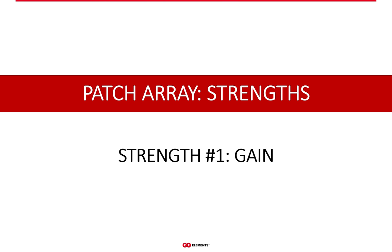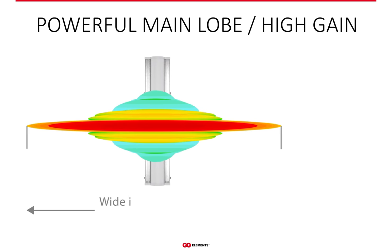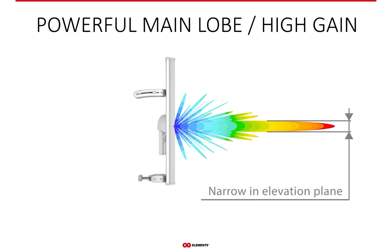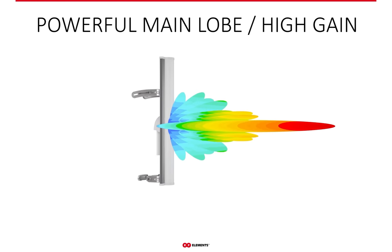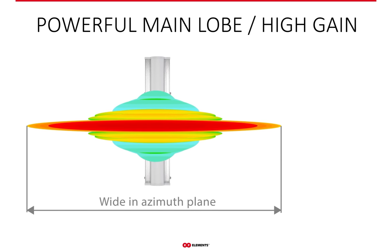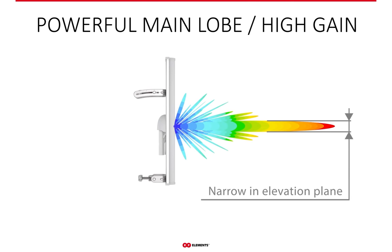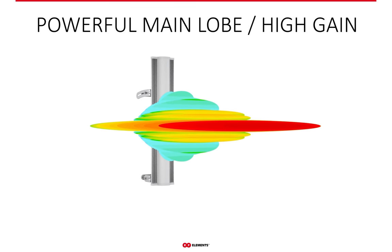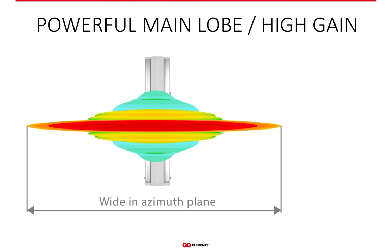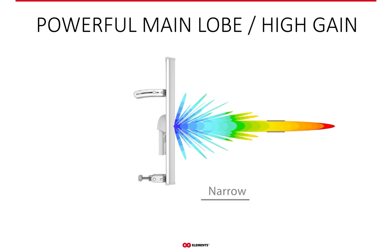Now for the strengths of patch arrays: the number one strength is gain. It is super easy to keep increasing gain by adding more patches to the array. A typical patch array radiation pattern has a main beam wide in the azimuth plane, which is good for angular coverage. However, although you can theoretically grow gain indefinitely, the real-life limitation is beam width — the elevation beam width becomes increasingly narrow with growing gain, so you cannot increase gain indefinitely while preserving decent sectorial coverage.